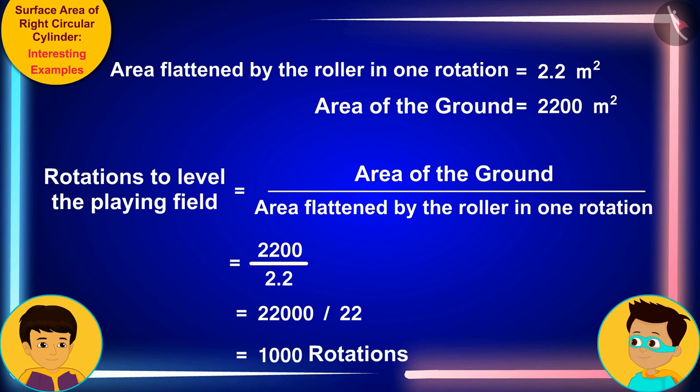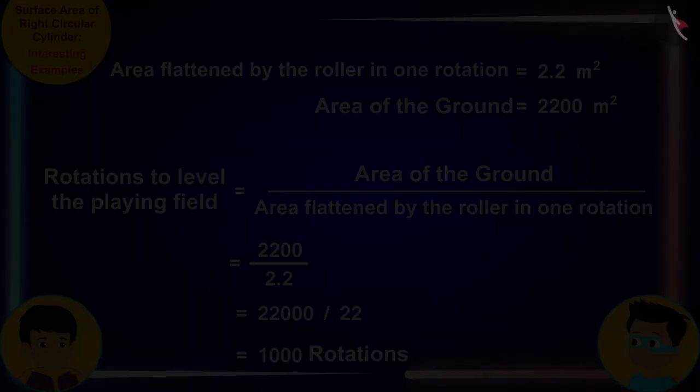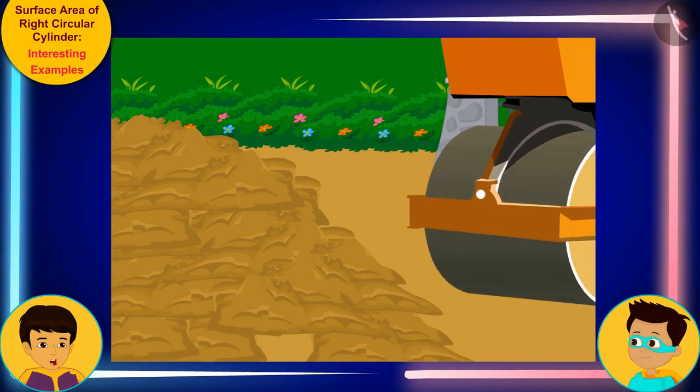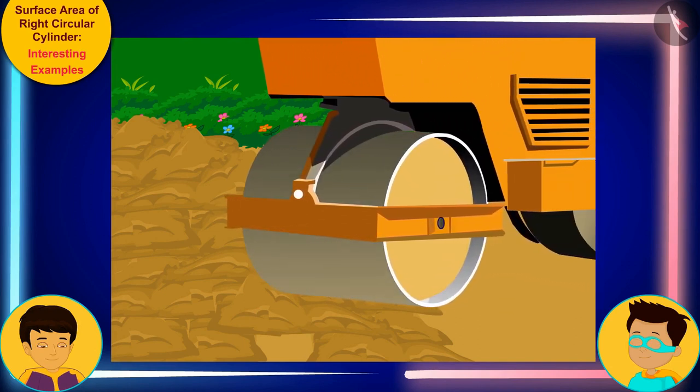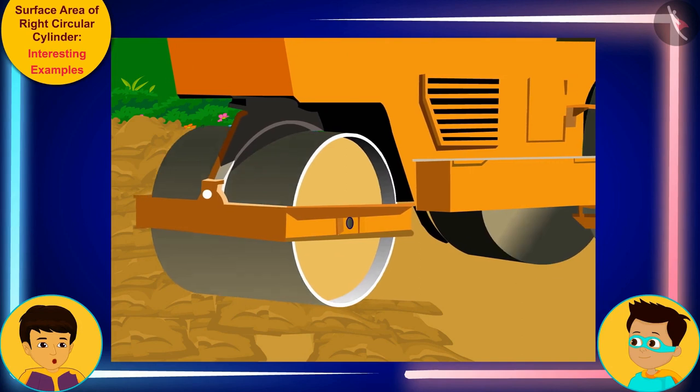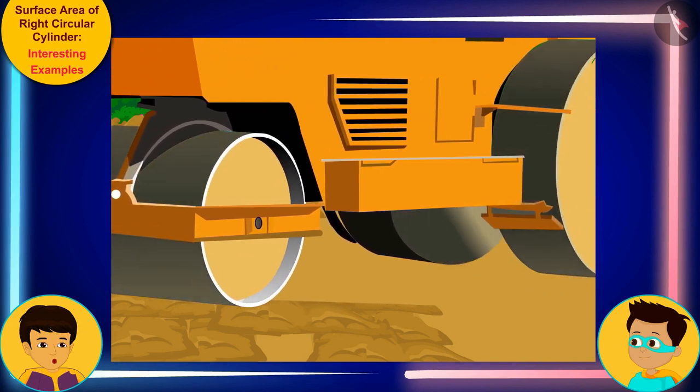Oh look, the roller has to make a thousand rotations to level the playing field. So many rotations. Then let's cancel the plan to play in the field today. Let us return to our world and go to my house and play a game.